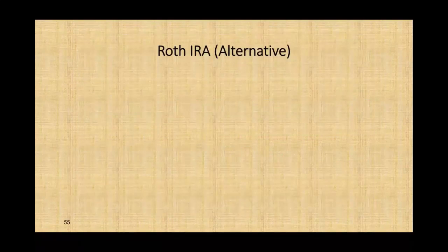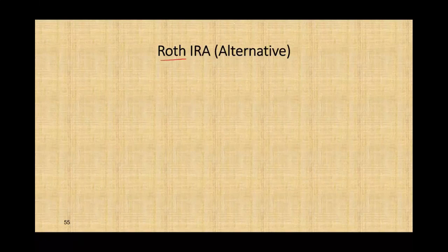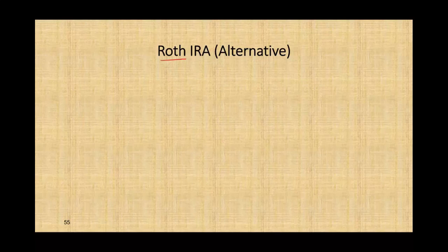So what happens if you don't qualify for a traditional IRA? You do have an alternative called Roth IRA. Roth is the individual name — Senator William Roth, who sponsored this plan and happens to be a senator from Delaware. We need to understand the difference between a Roth IRA and a traditional IRA. The first and most important difference is that contributions to a Roth IRA are non-deductible — you cannot deduct the contribution for AGI.